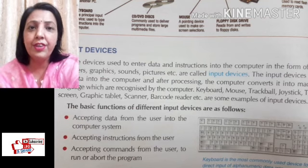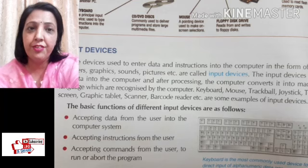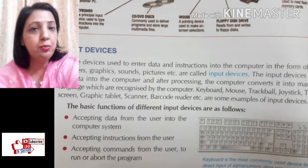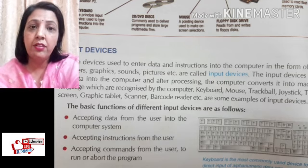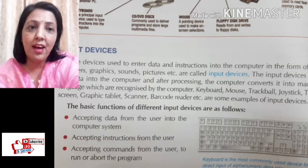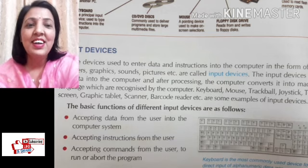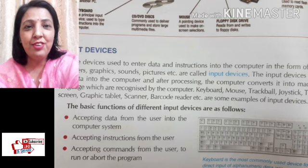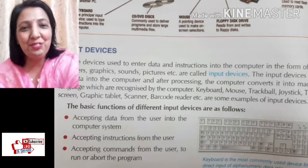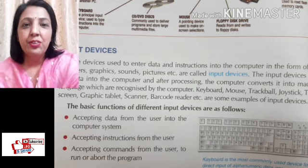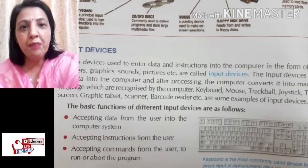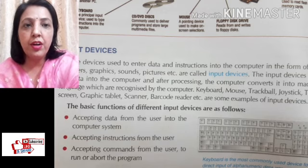Different types of data have different input devices. We can use keyboards, mouse, trackballs, joysticks, touch screens, graphic tablets, scanners, and barcode readers. You have seen barcode readers in malls — when you go to a store, you can see they have barcode machines. All these are part of input devices through which you can input your data to the computer.